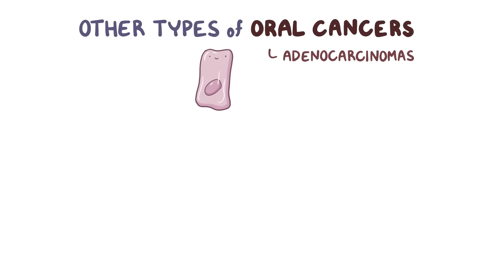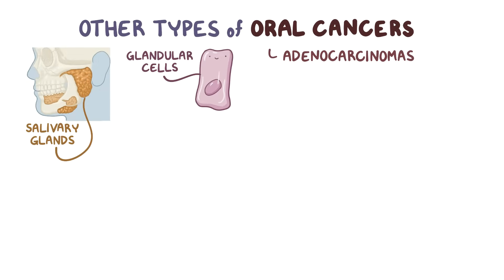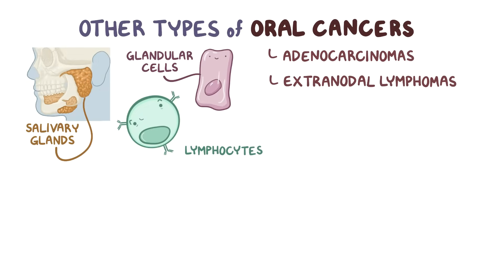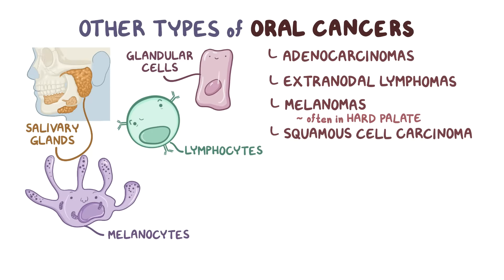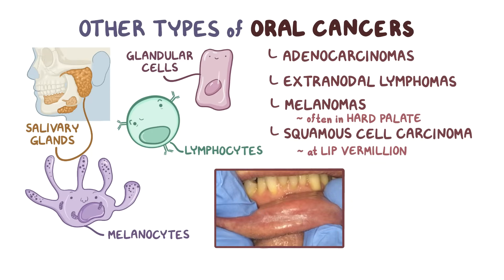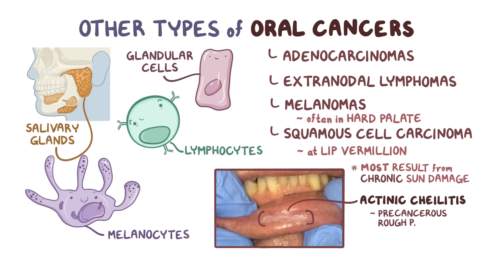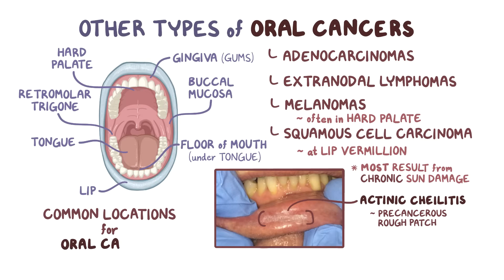In addition to squamous cell carcinomas, other types of oral cancers include adenocarcinomas, which develop in glandular cells like those of the salivary glands beneath the mucosa; extranodal lymphomas, which develop in lymphocytes; and melanomas, which develop in melanocytes found all over the mucosal epithelium but most often in the hard palate. Squamous cell carcinoma is also known to arise at the lip vermilion in those who smoke. However, most lip vermilion cancers result from chronic sun damage and are associated with actinic cheilitis. The most common locations for oral cancer are the lateral and ventral surfaces of the tongue and floor of the mouth, and the lower lip vermilion.